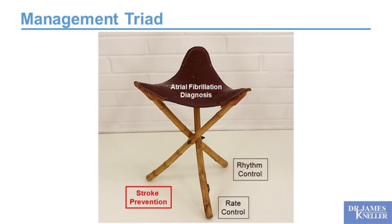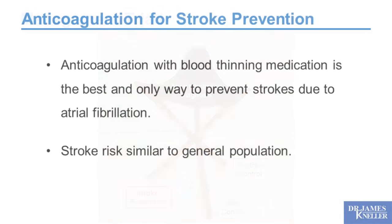Starting with stroke prevention — how do we prevent strokes? Anticoagulation with a blood-thinning medication is the best and only way to prevent strokes due to atrial fibrillation. When someone is adequately on a blood thinner, their stroke risk becomes similar to that of the general population, so the protection we provide can be very good.